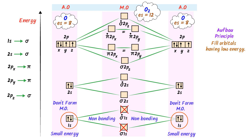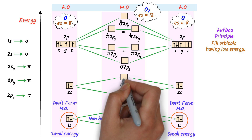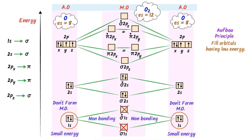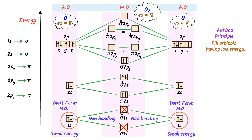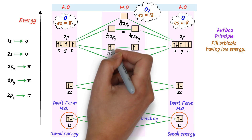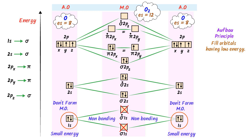According to the Aufbau principle, I place 2 electrons in sigma 2s, 2 electrons in sigma star 2s, 2 electrons in sigma 2pz, 1 electron in pi 2px and 1 electron in pi 2py, then again 1 electron in pi 2px and 1 electron in pi 2py. Now 2 electrons are remaining, so I put 1 electron in pi star 2px and 1 electron in pi star 2py.